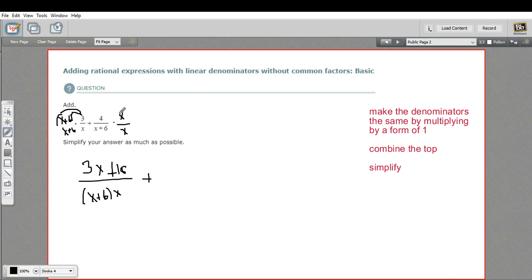That's a little easier. On top you have 4 times X, so 4X. And on the bottom you have the exact same thing, X plus 6 times X.